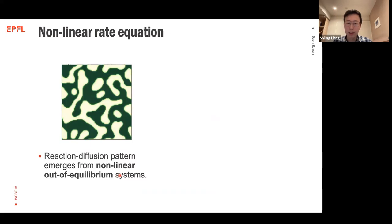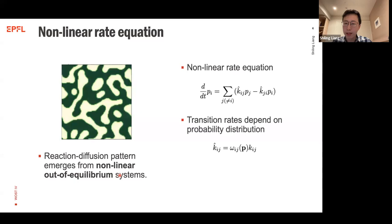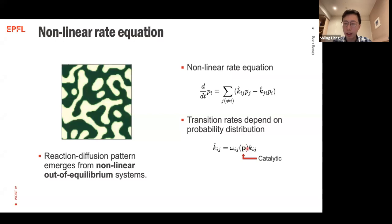Here we introduce a nonlinear rate equation that can characterize the nonlinear nature of symmetry breaking, such as pattern formation. The form of this nonlinear rate equation is similar to the master equation, but the transition rates are nonlinear and include pre-factors ω_ijp. These nonlinear factors represent catalytic mechanisms — for example, autocatalytic reactions — which make the system nonlinear while still retaining the master equation form.